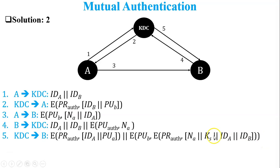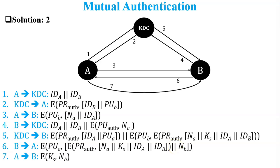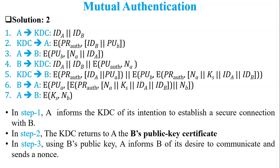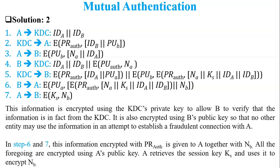User B also decrypts another portion of the message to get the session key, then sends that portion to user A encrypted using the public key of user A, also including nonce B. User A decrypts the message and gets the session key and nonce B, then sends nonce B to user B encrypted using the session key KS. In this scenario, the KDC is responsible for both authentication and key distribution. Both users are now authenticated with each other and have the secret key for communication. The detailed steps are described across the next three slides.